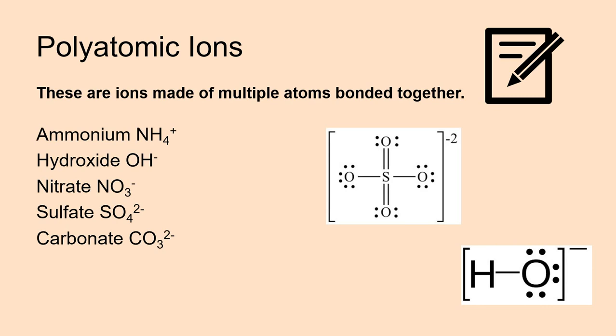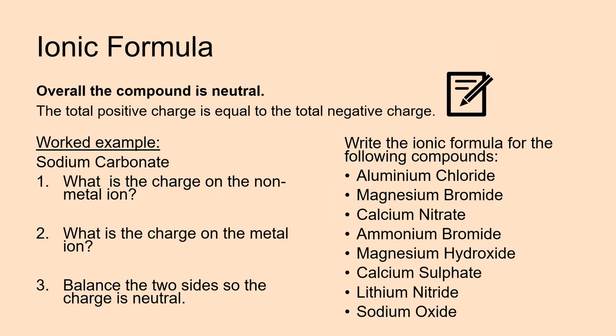We also have polyatomic ions, and these are ions made up of multiple atoms bonded together. Here are some examples. The one on the left are the ones that you might want to write down in your books. They are the ones we come across most often, and it's sometimes just really useful to know the charges of these ions. So, the sulfate ion has been fully drawn out for you, as has the hydroxide ion. So, the dots just represent electrons that haven't been paired up to form a bond yet. So, don't worry about those.